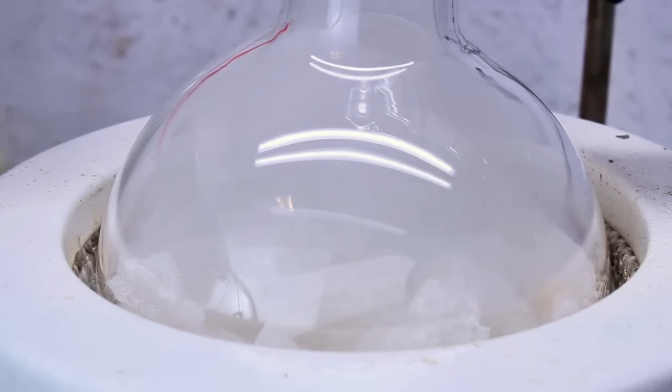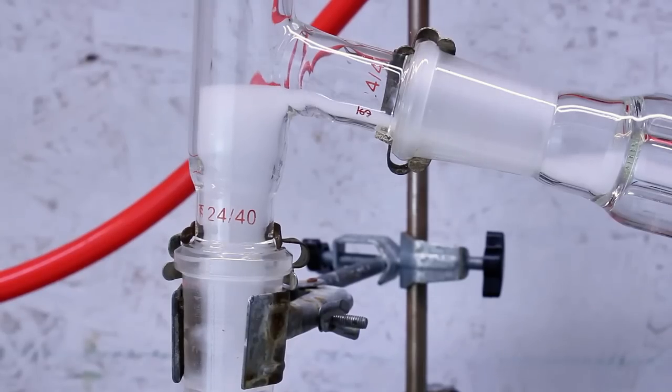The heating mantle is cranked onto max, which in my case is about 340 degrees celsius, and that quickly melts the polystyrene. It then begins to break down and give off an extremely dense white gas, which condenses into a translucent yellow liquid and drips into my collection flask.